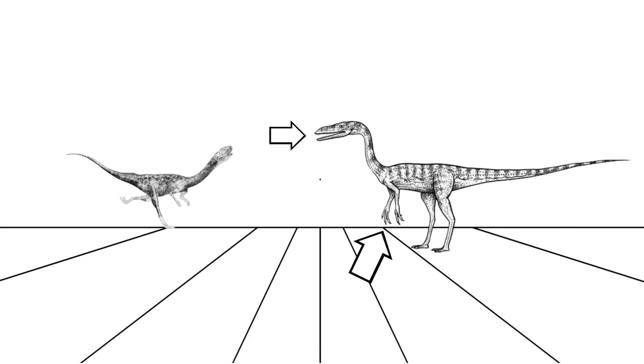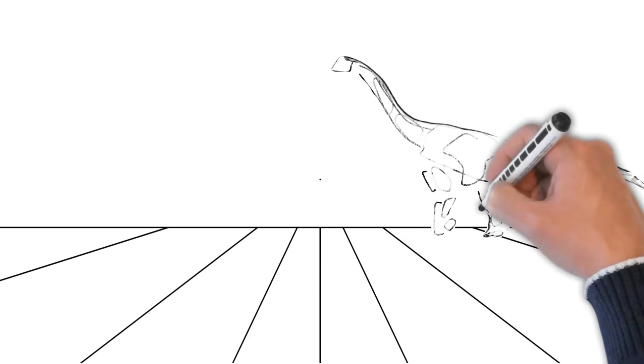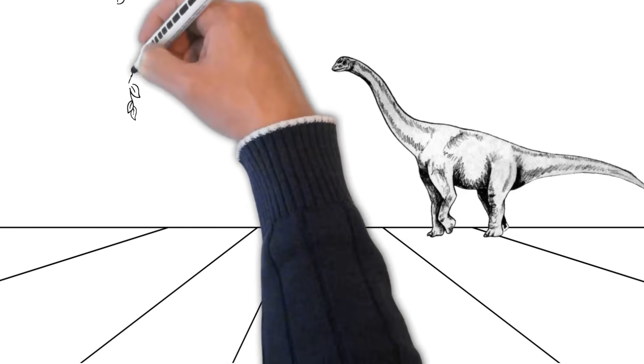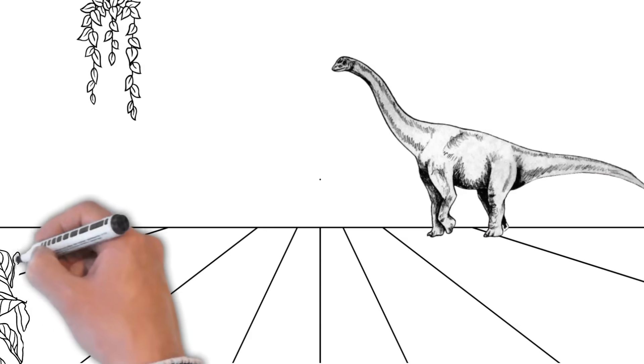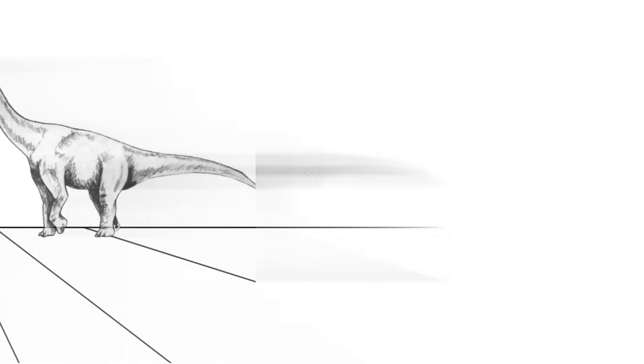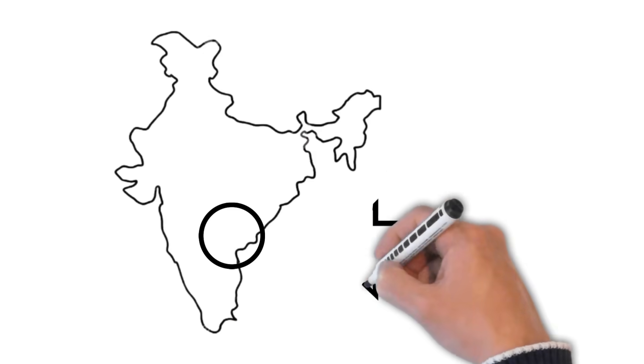Imagine this little predator darting through the ancient forests of central India. One of the oldest dinosaurs from India is Barapasaurus, a giant that lived around 180 million years ago during the Jurassic period. Barapasaurus was a long necked herbivore that could grow up to 50 feet long. It's one of the earliest known sauropods, and its fossils were found in the Gotovari Valley.